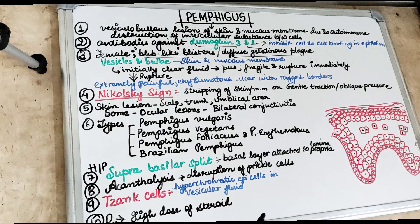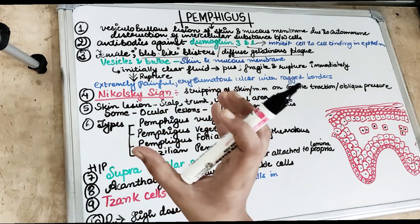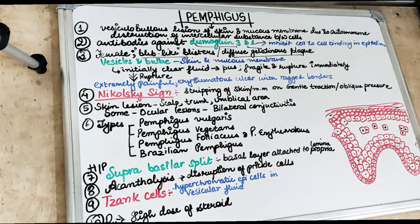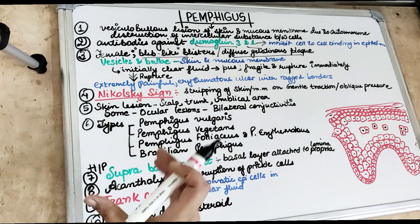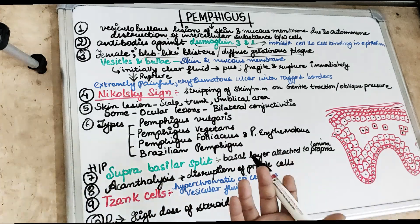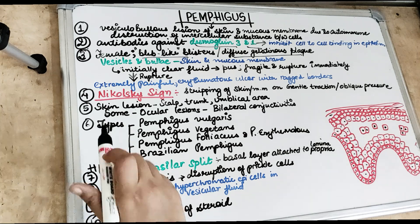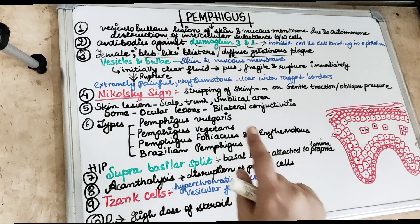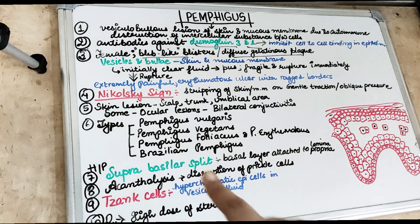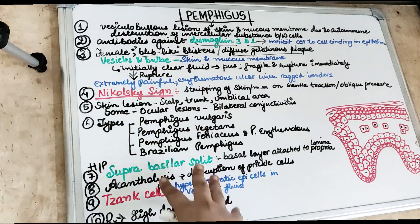Initially there are blisters and plaques, but later these form fluid-filled vesicles or bullae. As soon as these vesicles or bullae are formed, they rupture immediately and are very painful, forming ulcers. The skin of the patient gets separated from the underlying tissues, hence the Nikolsky sign — on gentle or oblique pressure, the skin comes out.